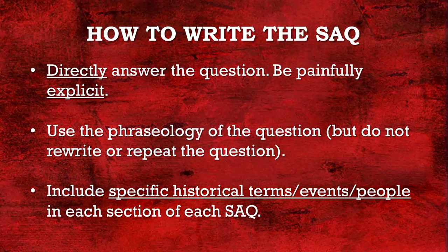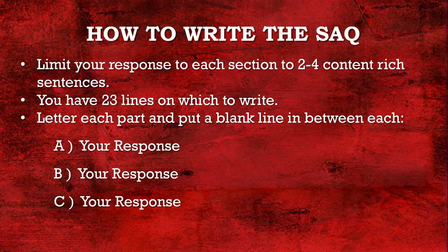How to write the short answer question: treat me, the teacher, as if I'm five years old — as if I have no idea what you're talking about. Be super descriptive, as you would to someone with no knowledge of the country. Directly answer the question first, but be painfully explicit. Use as much evidence and as many examples as you can to prove your point. Use the phraseology of the question, but do not rewrite or repeat the question itself — I want to see original thoughts. Include as many specific historical terms, events, and people as you can in each section of the SAQ.